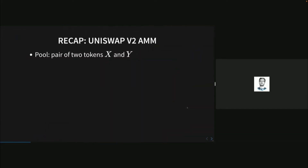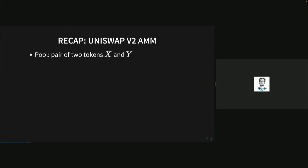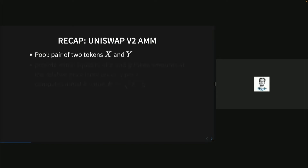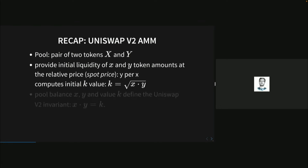We'll be building these lending protocols on Uniswap V2. A quick recap: Uniswap V2 has pools consisting of two pairs of tokens, X and Y. Someone provides initial liquidity of X tokens and Y tokens, and the ratio defines the spot price of X per Y. You compute some initial value K set to the square root of X times Y. These pool balances define the Uniswap V2 invariant: X times Y equals K squared.